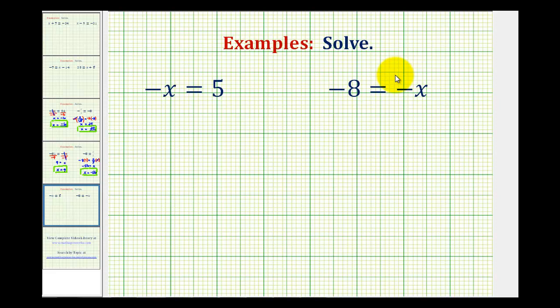We want to solve the following one-step equations that involve negative x or the opposite of x. So we can read this first equation two ways. We can read this as negative x equals positive 5, or we can also read this as the opposite of x is equal to positive 5.